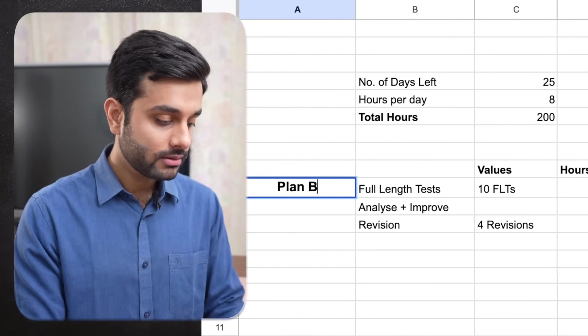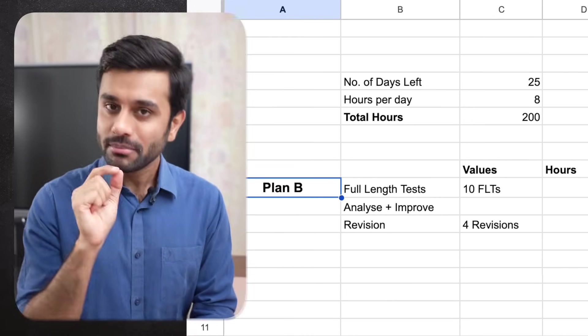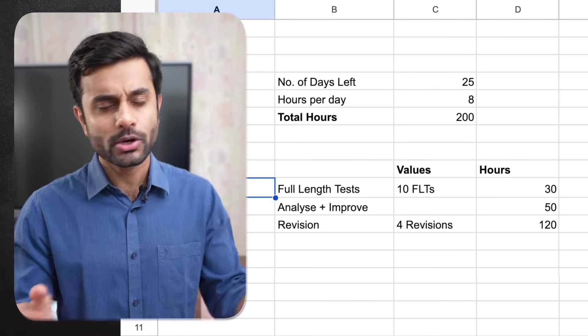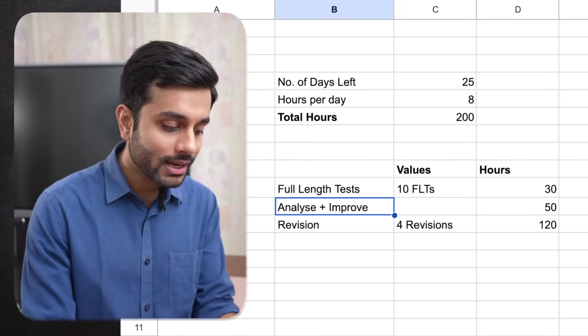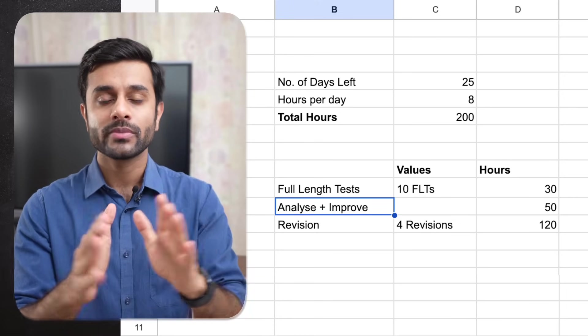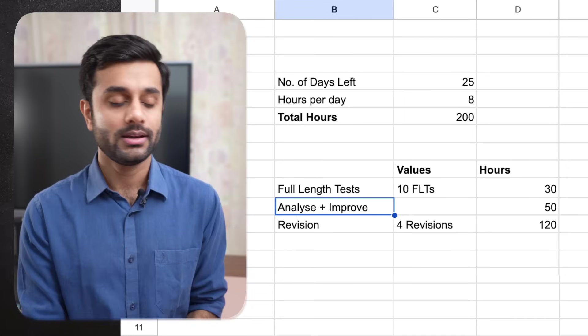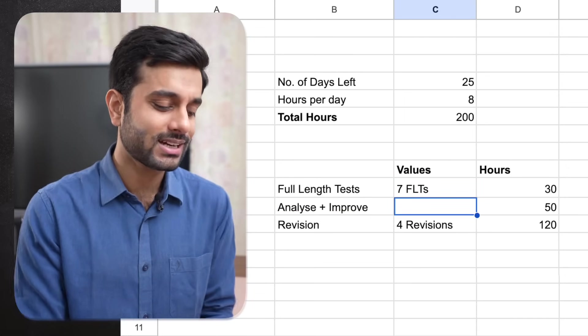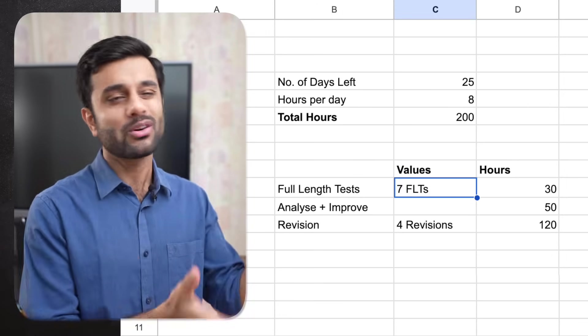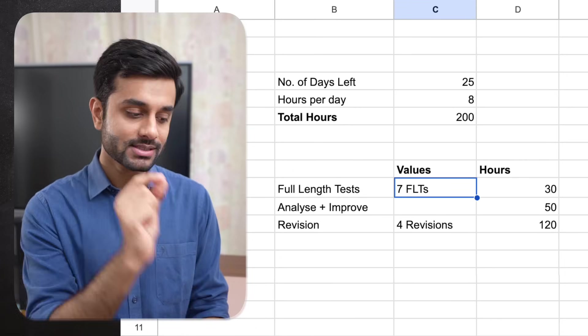Now coming to plan B. What is this plan B? For whom do we have this plan B? This plan B is for those students who are not able to write 10 FLTs due to whatever reason. That you take more time in analysis plus improvement let's say, you want to give more time in that, which is fine, which is perfectly fine. So you think that instead of 10 FLTs I will write maybe 7 FLTs. So for such students or those of you who are not that comfortable in writing 10 FLTs, they think there are more things, maybe college exam or maybe anything. For them this is plan B which is having 7 FLTs.